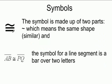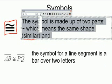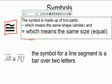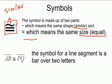If we're looking at symbols, here is our symbol for congruent. There's a little squiggly line on top and an equal sign on the bottom. The squiggly line on top means it's the same shape, which means it's similar. The equal sign means it's the same size or it's equal. So the squiggly line means it's similar and the equal sign means it's equal — the top means it's a similar shape and the equal sign means it's the same size.